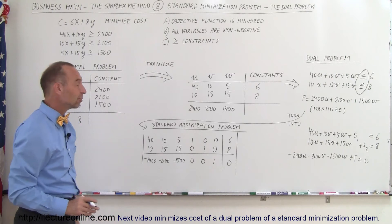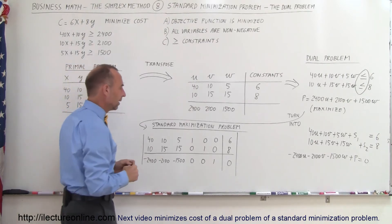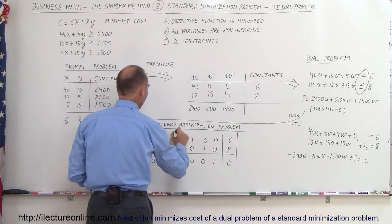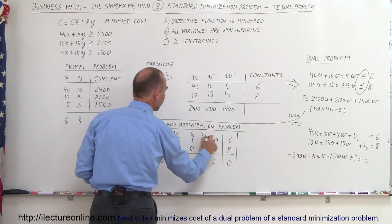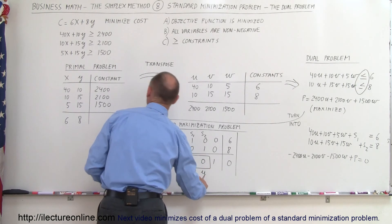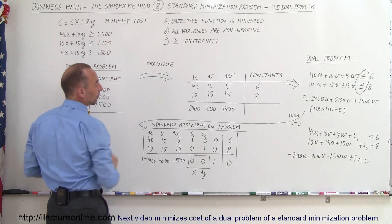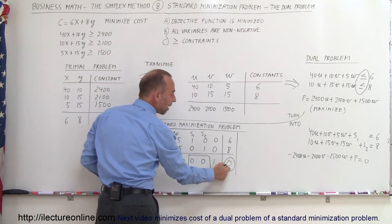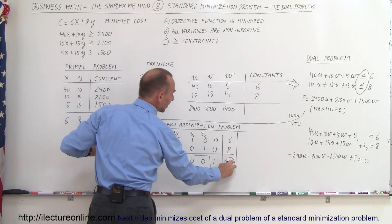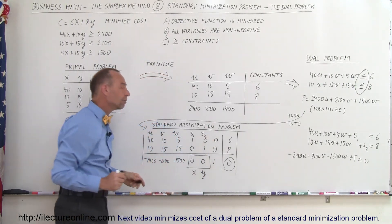If I solve this standard maximization problem, then I will find the solution to my initial minimization problem. Where will I find the answers? The variables are u, v, and w, and here are the two slack variables s1 and s2. It turns out that the slack variable columns here will contain the solution to my x and y variables of the minimization problem. Whatever those numbers end up being, those are the solutions to my initial minimization problem. The maximum profit I find will be my equivalent minimum cost.